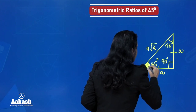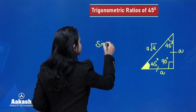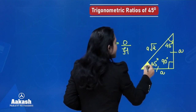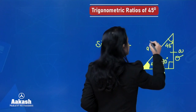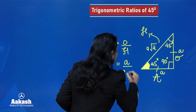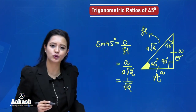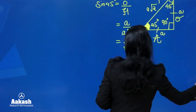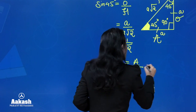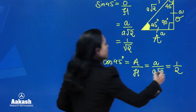For this angle, let's find the trigonometric ratios. Sin 45° equals opposite over hypotenuse. The opposite measures A and the hypotenuse measures A√2, so sin 45° = A/(A√2) = 1/√2. Similarly, cos 45° equals adjacent over hypotenuse. The adjacent also measures A and hypotenuse is A√2, so cos 45° = 1/√2 as well.